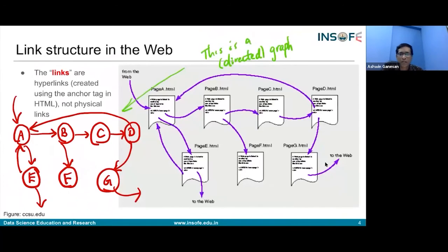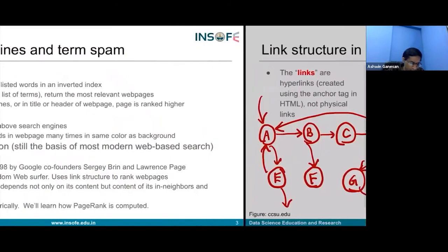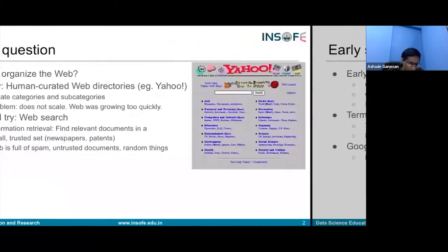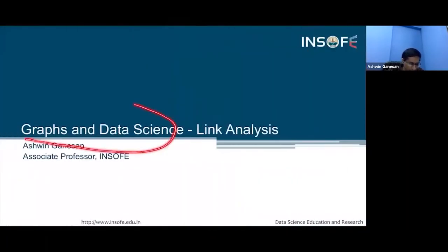Today we're going to be looking at the PageRank algorithm, which was proposed by Brin and Page. We're in the course called Graphs and Data Science, and the first module is on link analysis. Today is the fourth session of this module, and next week I'll be starting the second module.